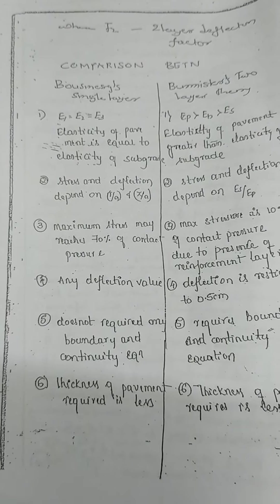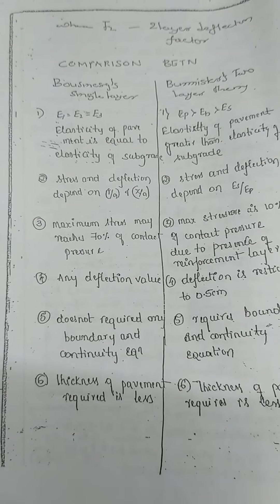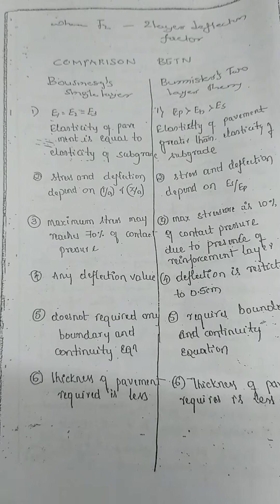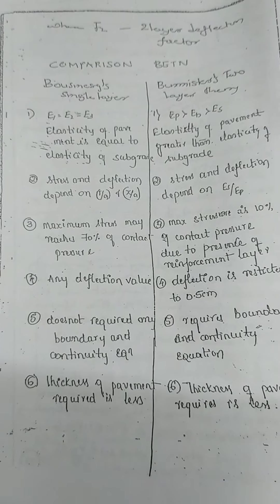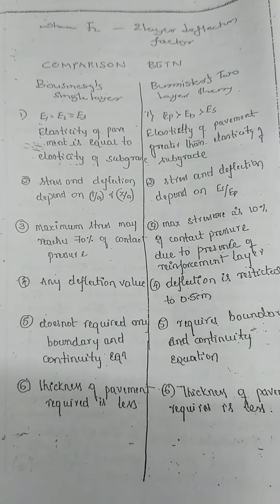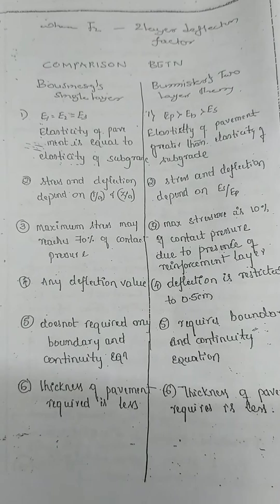Fourth difference: In Bosnick's theory, deflection can take any value, whereas in Burmester's theory, deflection is restricted to 0.5 cm.